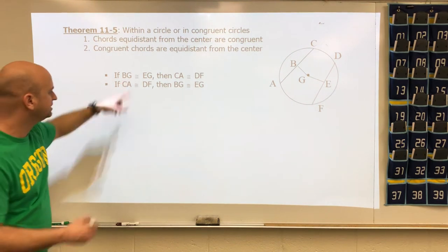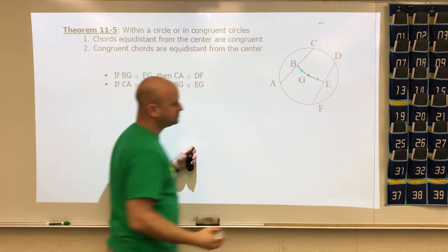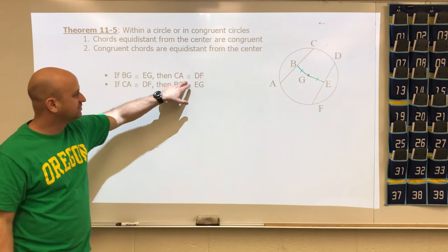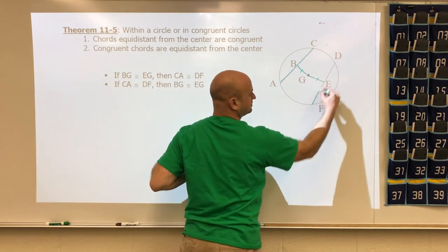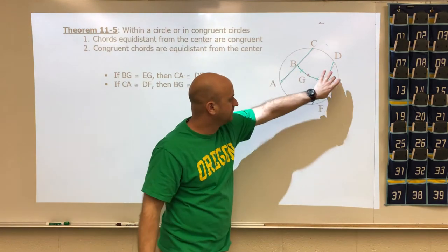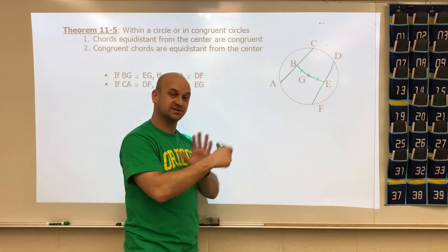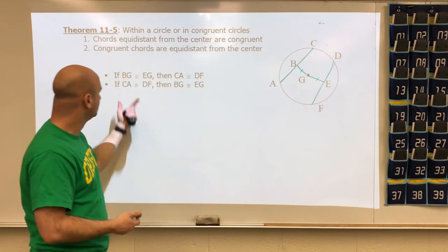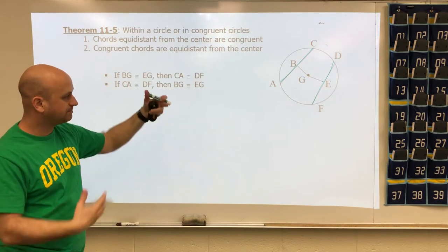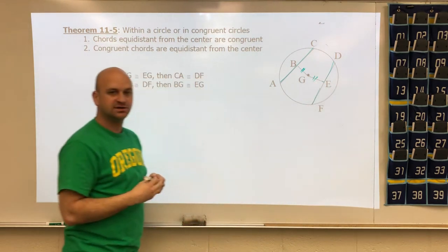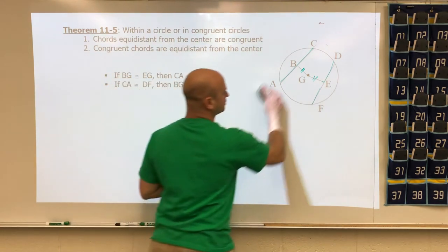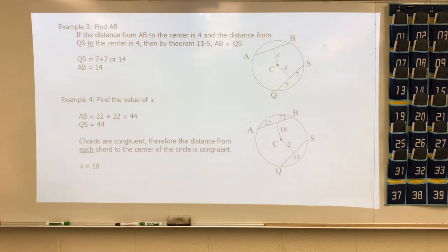In this example, if DG is congruent to EG — those are the distances from the center — then chord CA is congruent to the other chord. Visually, the same distance from center means the same chord length, regardless of the angle. Conversely, if chord CA is congruent to chord DF, then the perpendicular distances BG must also be congruent.